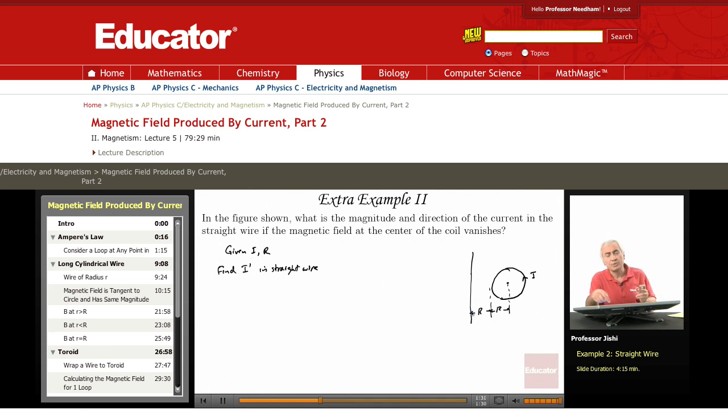the loop produces a magnetic field at the center of the circle. And since the current is counterclockwise, the field is out of the page.